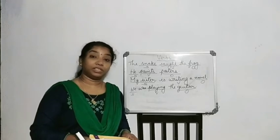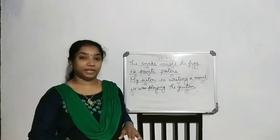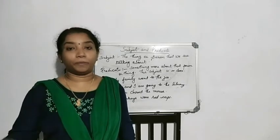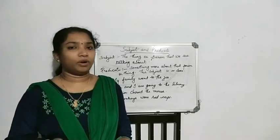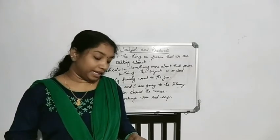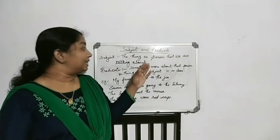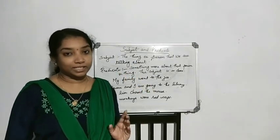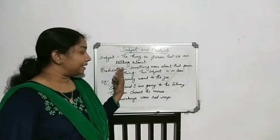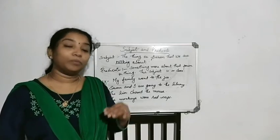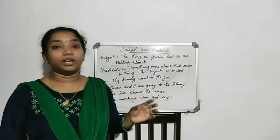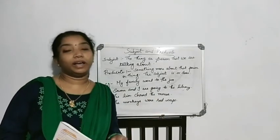Now we will move on to subject and predicate. A sentence can be separated into two parts: subject and predicate. Subject is a thing or a person that we are talking about. Predicate means something more about that person or thing — what the subject is or does. It always begins with the verb.